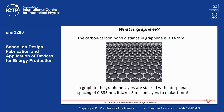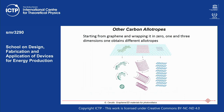There are other carbon allotropes that can be obtained starting from graphene by wrapping it in zero, one, or three dimensions. In three dimensions, stacking graphene layers gives graphite. Wrapping a piece of graphene around itself in zero dimensions gives a fullerene. Wrapping it in one dimension gives a tube known as a carbon nanotube.